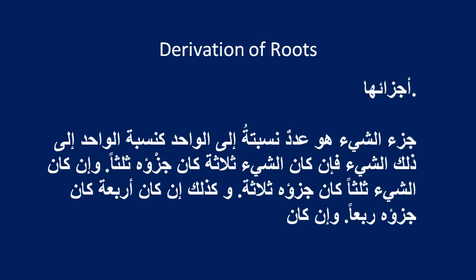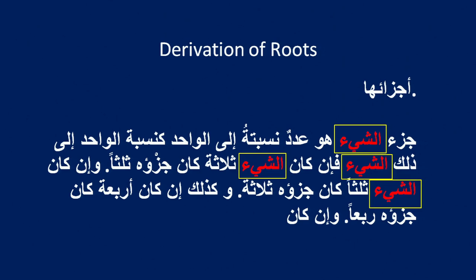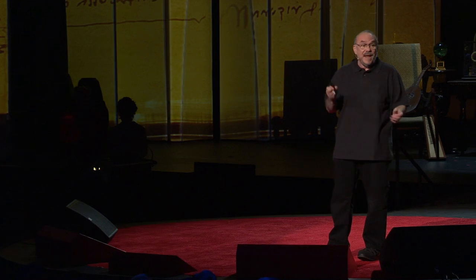In Arabic, we can make this definite by adding the definite article al. So this is al-sheen — the unknown thing. This is a word that appears throughout early mathematics, such as this 10th century derivation of proofs. The problem for the medieval Spanish scholars who were tasked with translating this material is that the letter sheen and the word sheen can't be rendered into Spanish, because Spanish doesn't have that sh sound.